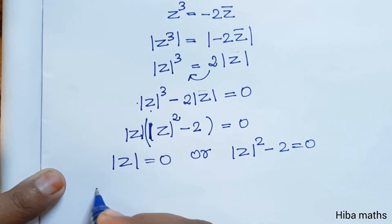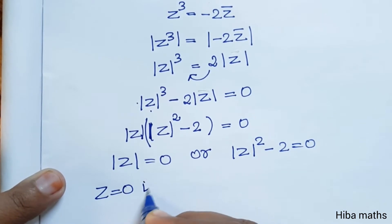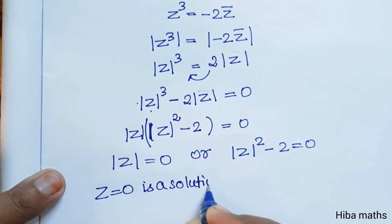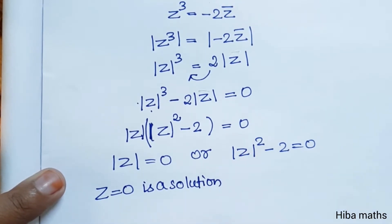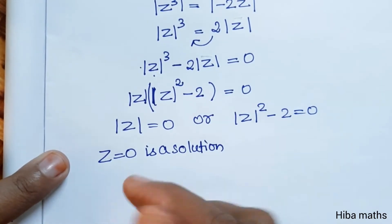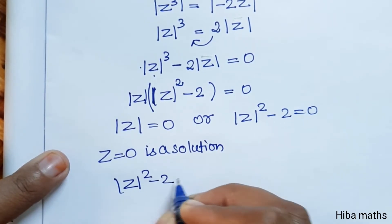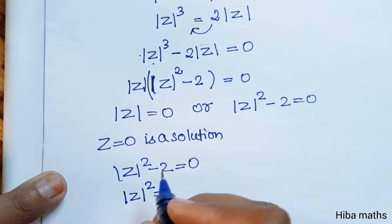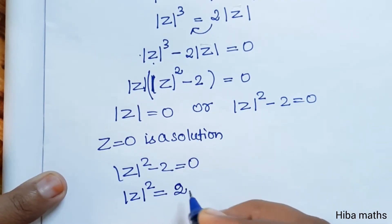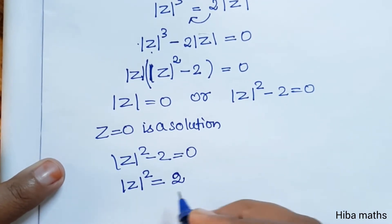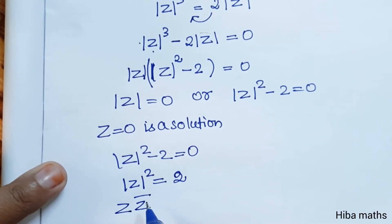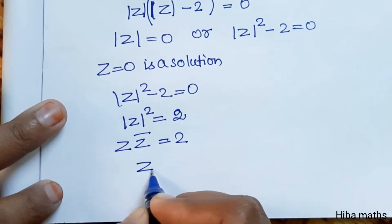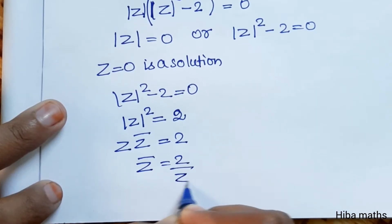|Z| = 0 is a solution, giving Z = 0 as the first solution. For the second case, |Z|² = 2. Since Z·Z̄ = |Z|², we get |Z|² = 2, so Z̄ = 2/Z.